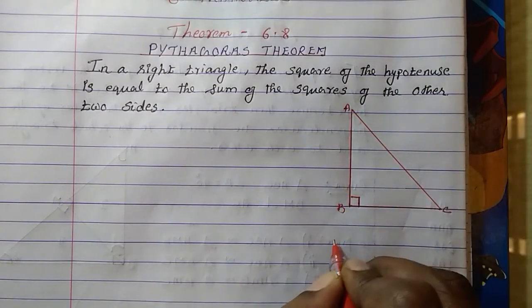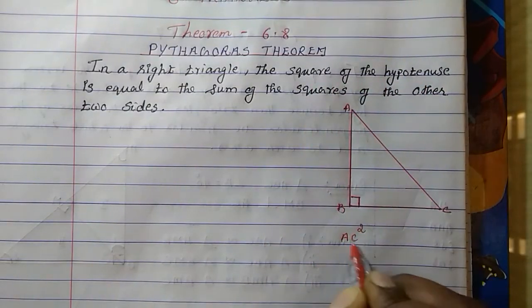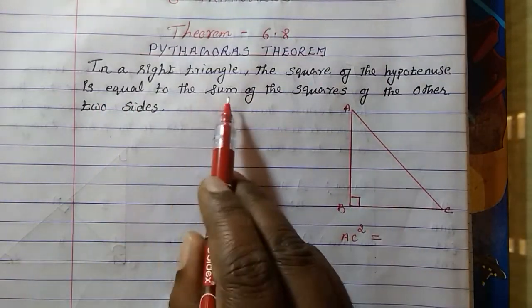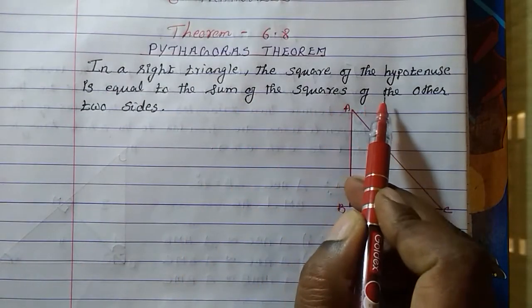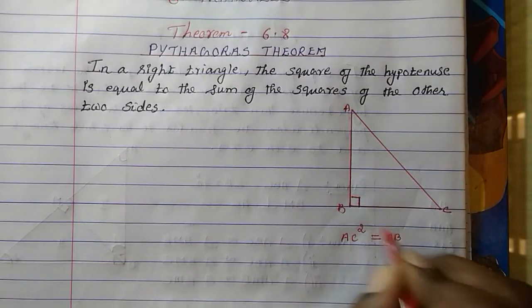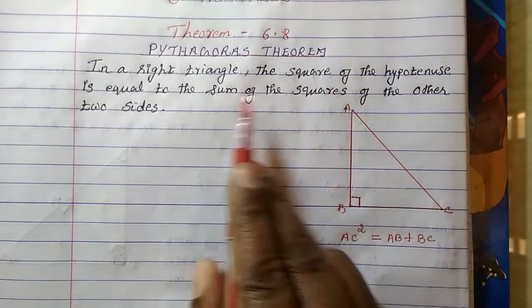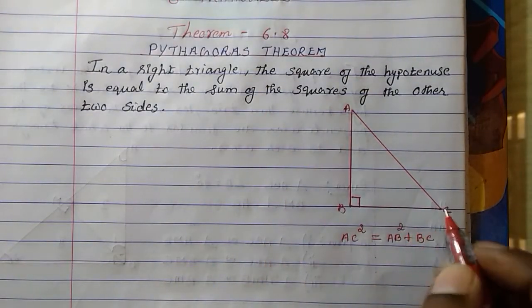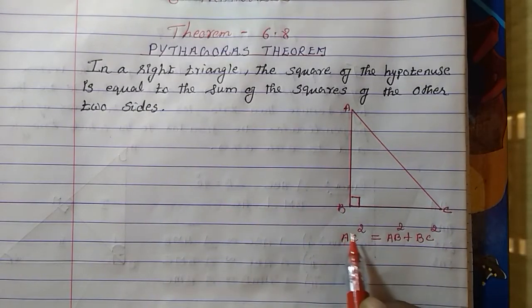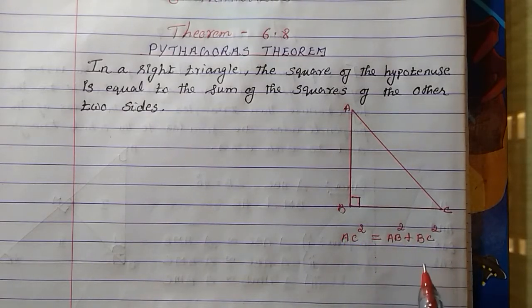Here the hypotenuse is AC. So the square of the hypotenuse means AC squared is equal to the sum of the squares of the other two sides. The other two sides are AB and BC, so AB squared plus BC squared. The square of the hypotenuse is equal to the sum of the squares of the two sides.